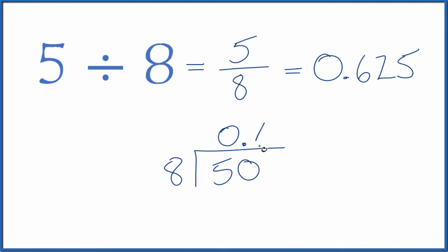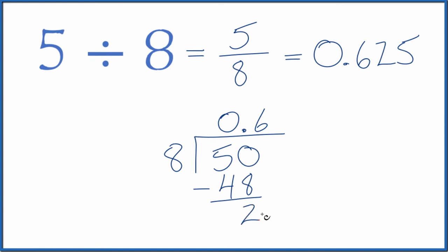Six times eight, that's 48. We subtract, we get two. Since eight doesn't go into two, we're going to call this 20, move over one decimal.